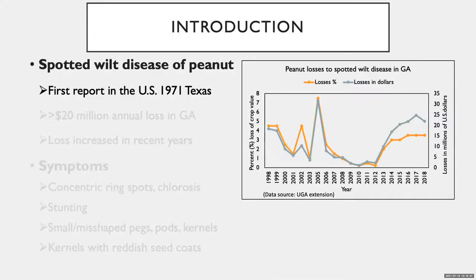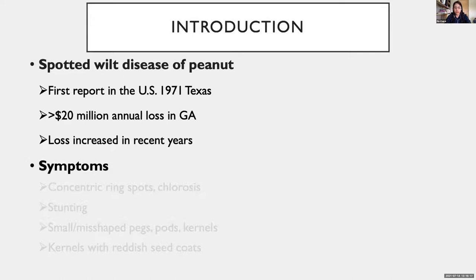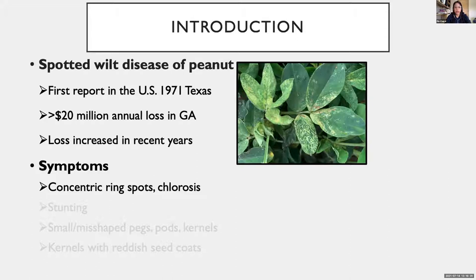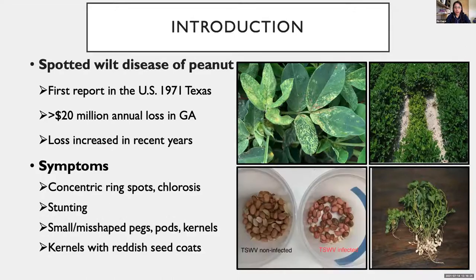Spotted wilt disease of peanut is a major constraint of peanut production in the U.S. The disease was first reported in the U.S. in 1971 in Texas and soon became ubiquitous across major peanut-producing states. It costs over $20 million in losses annually in Georgia alone, and losses to the disease have been increasing in recent years. Symptoms include concentric ring spots and chlorosis on leaflets, stunting of above-ground plant parts, small and irregularly shaped pods and kernels, and reddish seed coats.